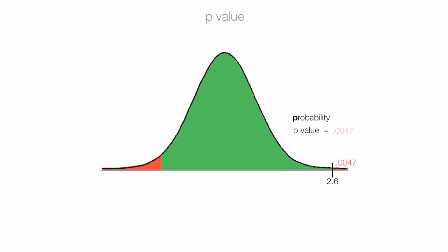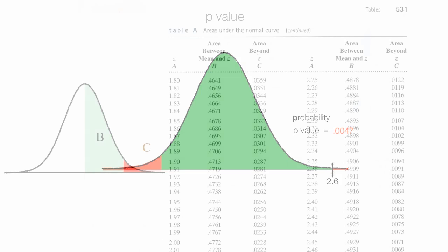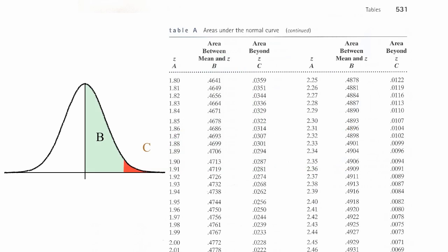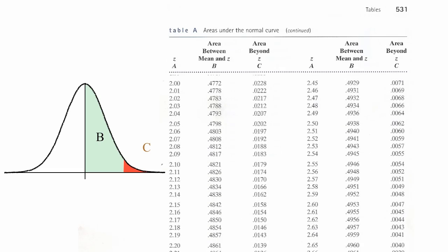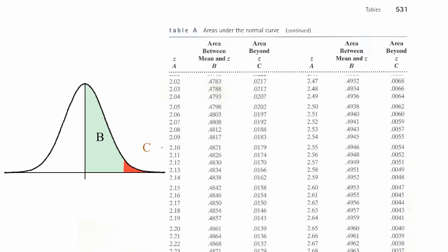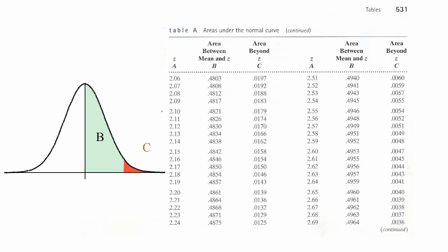In the back of all statistics books, there's a thing called a normalized table with z-scores and probabilities. And in this table, I would look for the z-score of 2.6, which is right here, and that has a p-value of 0.0047.